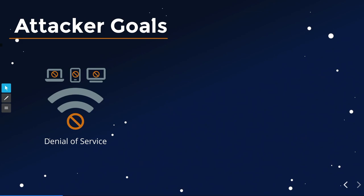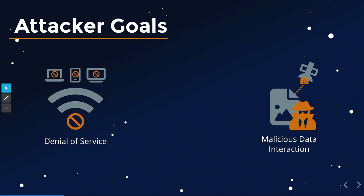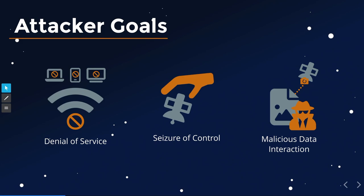What attacker goals can you achieve with firmware attacks? Obviously you can do denial of service — today the most common satellite attack. Another vector is malicious data interaction: for example, tampering with images on an Earth observation satellite to introduce or remove artifacts. But we'll be looking at seizure of control — if you never had a satellite and you want one, that's what you have to do.